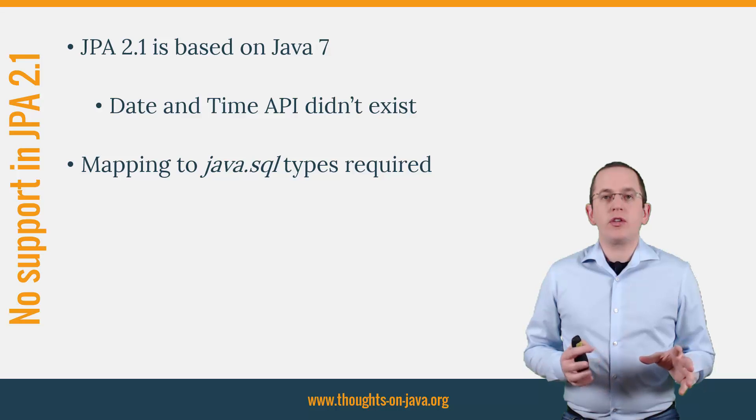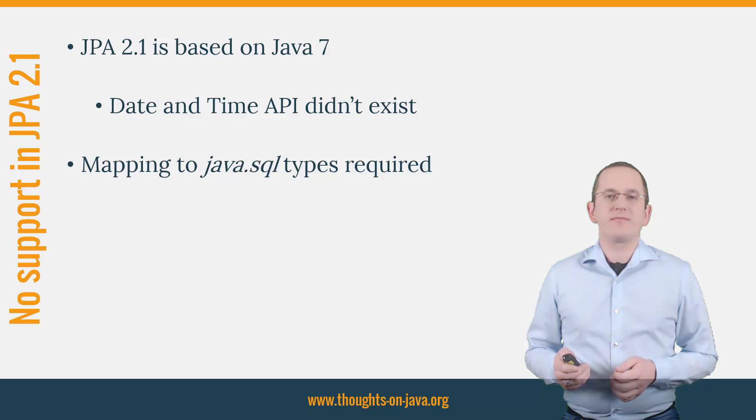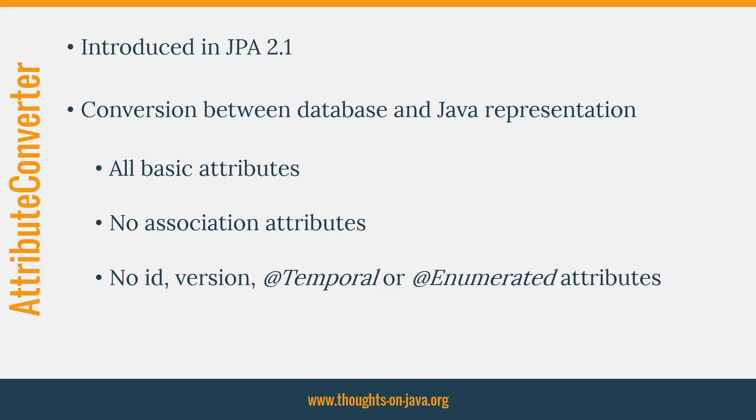With an attribute converter, you can do that with just a few lines of code. Attribute converters were introduced in JPA 2.1 and allow you to define the conversion between Java and database attribute types in a standardized way. You can use them to convert all basic attributes defined by entity classes, mapped super classes, or embeddable classes. The only exceptions are ID attributes, version attributes, association attributes, and attributes annotated as temporal or enumerated.